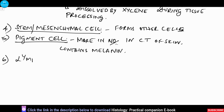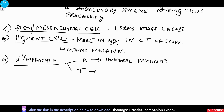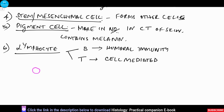Next we have the lymphocyte. There are two types: B lymphocytes, which help in humoral immunity, and T lymphocytes, which help in cell-mediated immunity. Structurally both appear almost the same. There are two sizes — small and large. The lymphocyte has a large nucleus which almost fills the entire cell with a small amount of cytoplasm in the periphery. These lymphocytes can be appreciated in slides of connective tissue.